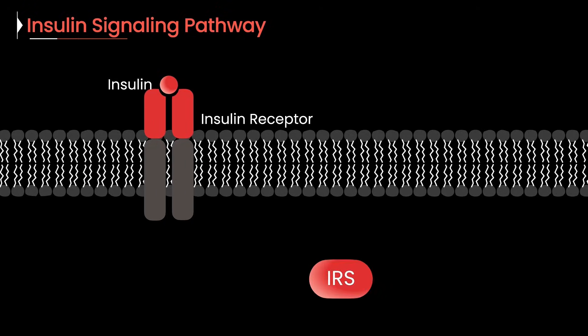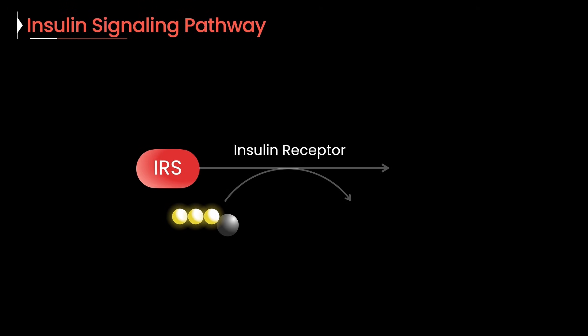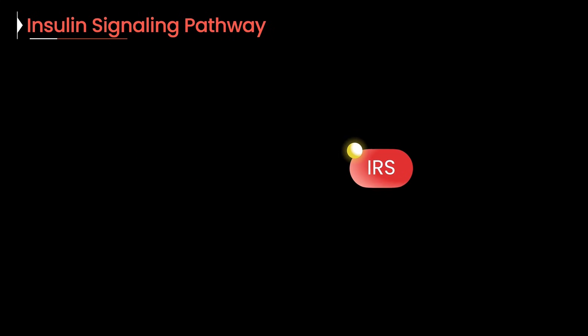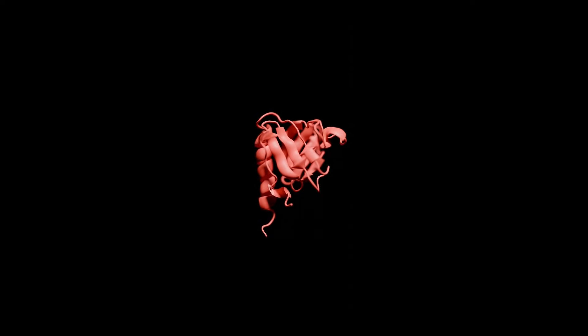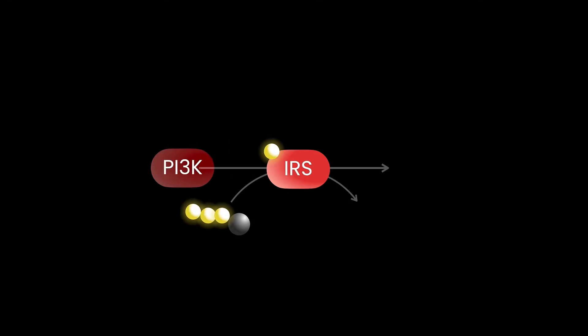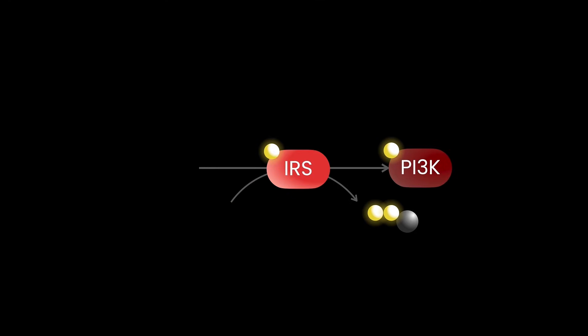Insulin latches onto its receptor, and this starts a game of tag. The receptor takes one of ATP's phosphates and slaps it onto another protein, called the IRS. Once the phosphate trigger gets added, the IRS changes shape and becomes more active.